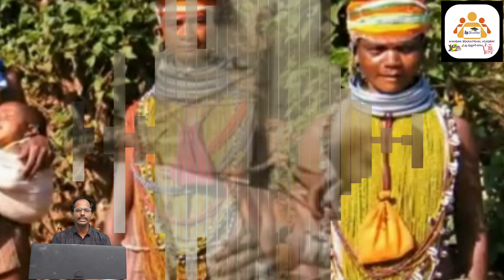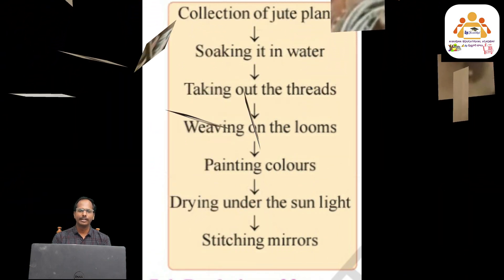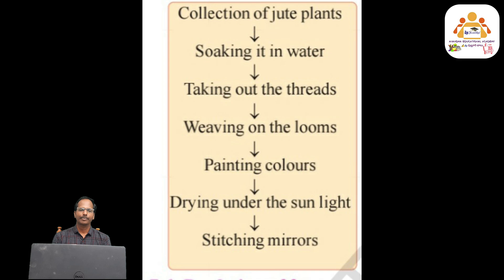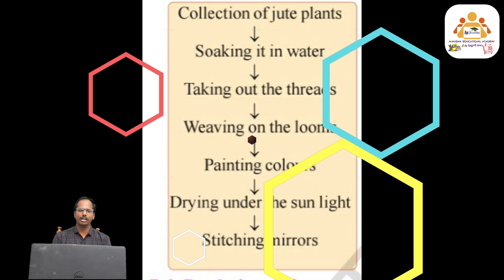Their way of dressing is also unique. They cover their bodies with cloth made from jute. Bonda women have great skills in making these cloths. First they soak the jute plants in nearby streams for two to three days, then weave out thread and dry them for three days under the sun. They collect different colors from the forest, mix them with the thread, and make the cloth on a hand loom. They also stitch thin, beautiful mirrors on these cloths.